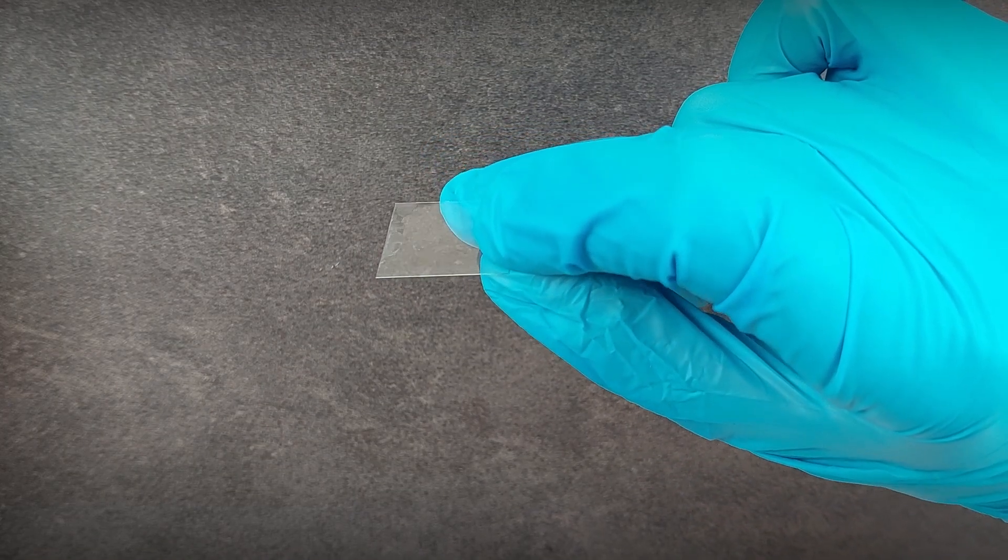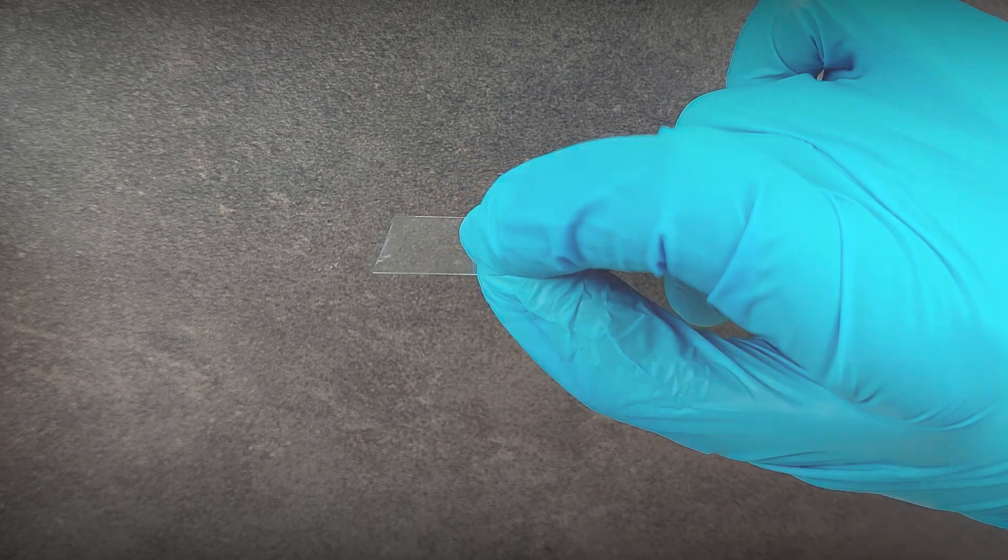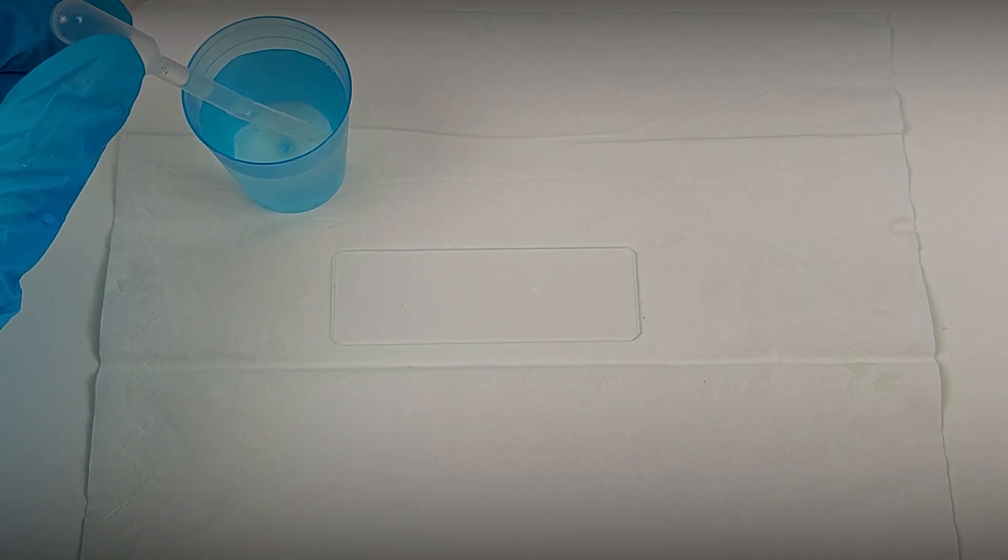A sample of slime and perhaps a few scales will be left on the glass. Use a pipette to put a drop of aquarium water onto the middle of the slide.